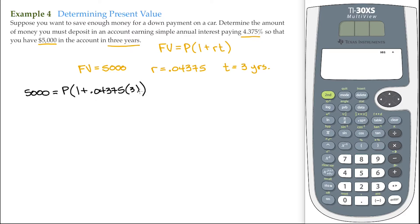So I'm going to go ahead and I'm going to find this first on our calculator, 0.04375 times 3, so this is $5,000, that's our future value. 1 plus 0.13125.